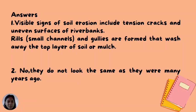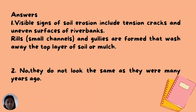Sample answers: Number 1 — Visible signs of soil erosion include tension cracks and uneven surfaces of riverbanks. Rills or small channels or gullies are formed that wash away the top layer of soil or mulch. Number 2 — No, they do not look the same as they were many years ago.